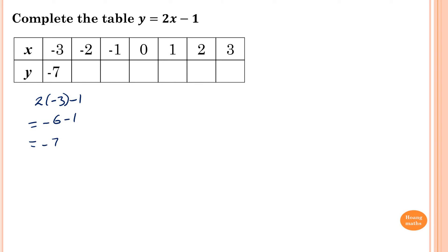When x is negative 2, y equals 2 lots of minus 2, minus 1. So minus 2 times 2 is minus 4, minus 1 — the answer is negative 5.